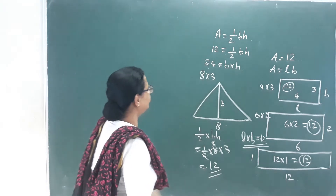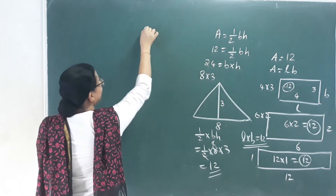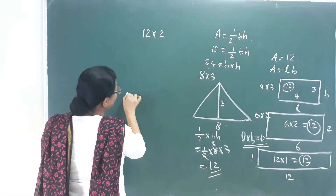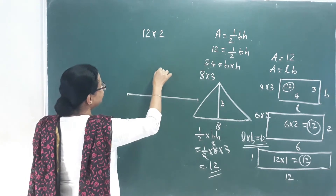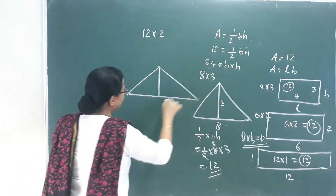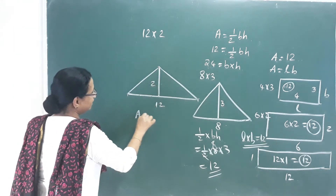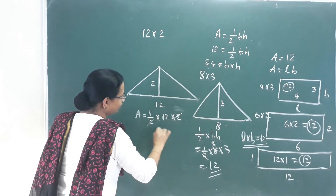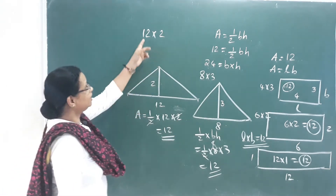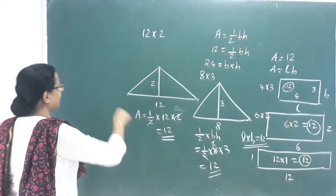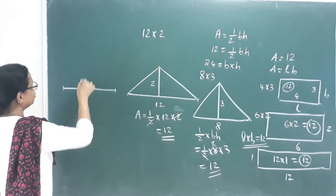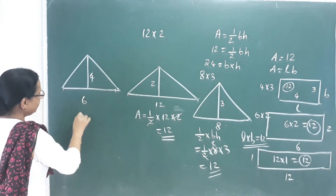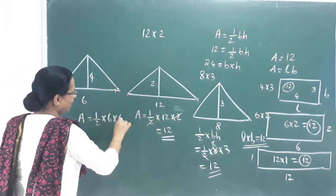I have to mark it — that is 24. 12 into 2 is 24. We have to mark it with base 12 and height 2. Area is equal to half base into height, which gives 12 cm². If we take 6 into 4, this is 6 cm base and 4 cm height. Area is equal to half base into height — half of 6 into 4 gives 12 cm².